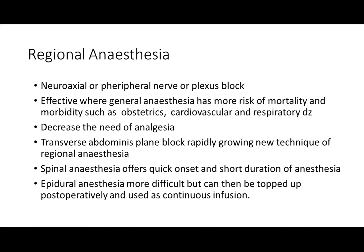Regional anesthesia includes neuraxial blocks, peripheral nerve/plexus blocks, epidural anesthesia, and spinal anesthesia — five types in total. It is preferred when general anesthesia carries increased mortality and morbidity, such as in obstetrics, cardiovascular disease, and respiratory disease. Regional anesthesia decreases the need for postoperative analgesia. The Transversus Abdominis Plane (TAP) block is a rapidly growing new technique, blocking T6 to L1 of the abdominal wall. Spinal anesthesia offers quick onset and short duration. Epidural anesthesia is more technically difficult than spinal but can be continued as a catheter for postoperative pain management and continuous infusion.